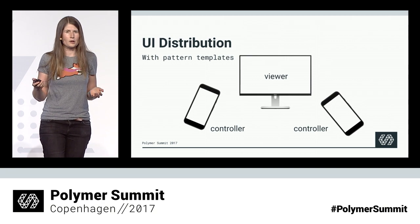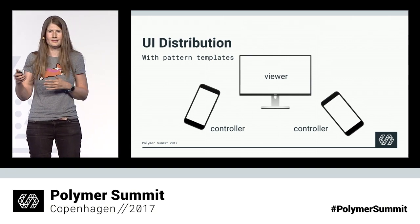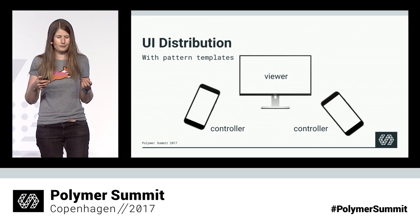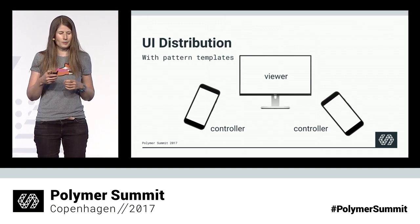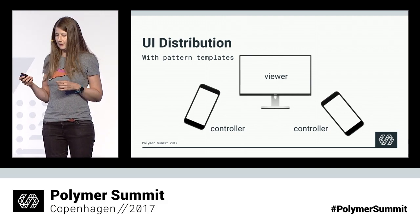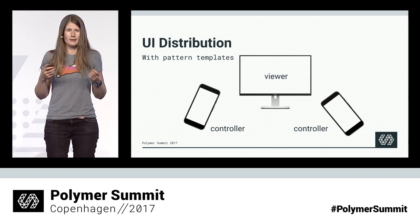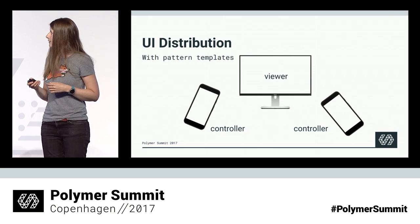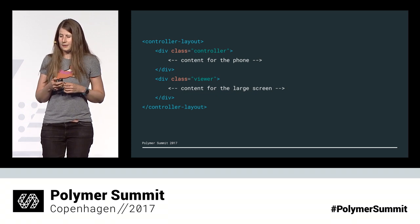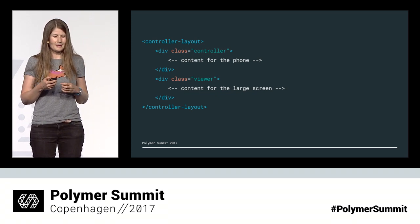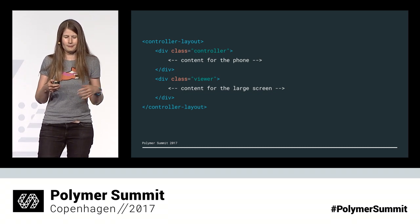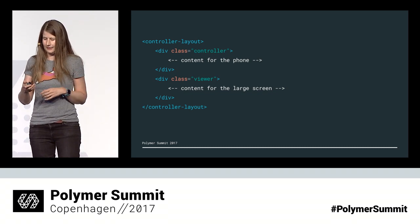You can write code as if it were all running on a single device, but you may still want to specify what part of the UI should be shown on what device. For that, we provide templates for common distribution patterns. One of these is the remote control pattern, where phones control a larger screen — we call the phones 'controllers' and the large screen the 'viewer'. In the code, you add the controller layout component to your application, then add a controller class to elements that should go to the controller, and a viewer class to elements that should appear on the viewer. And that's it.